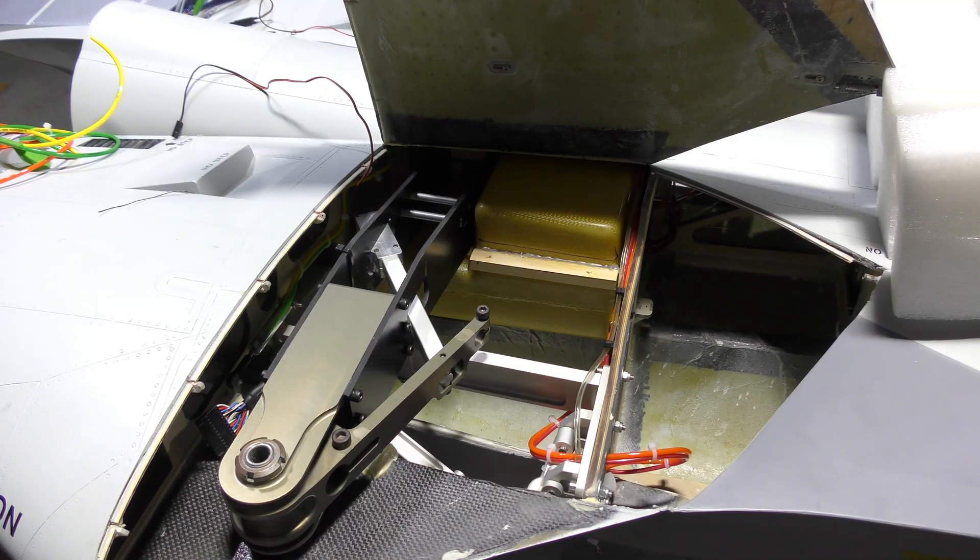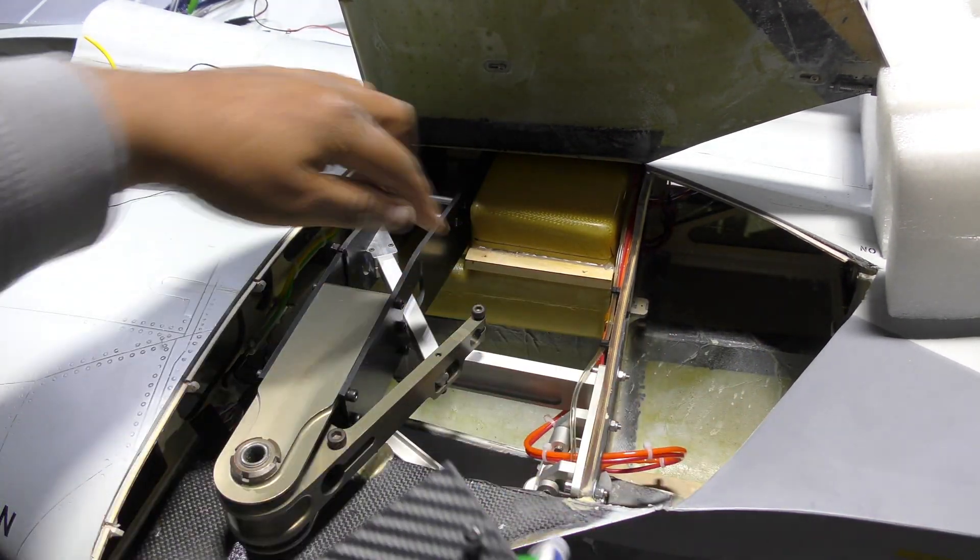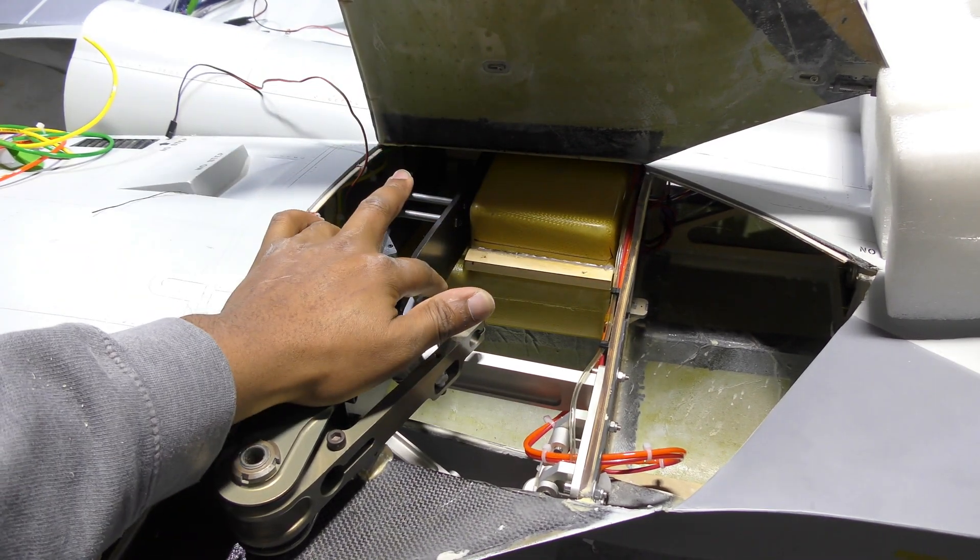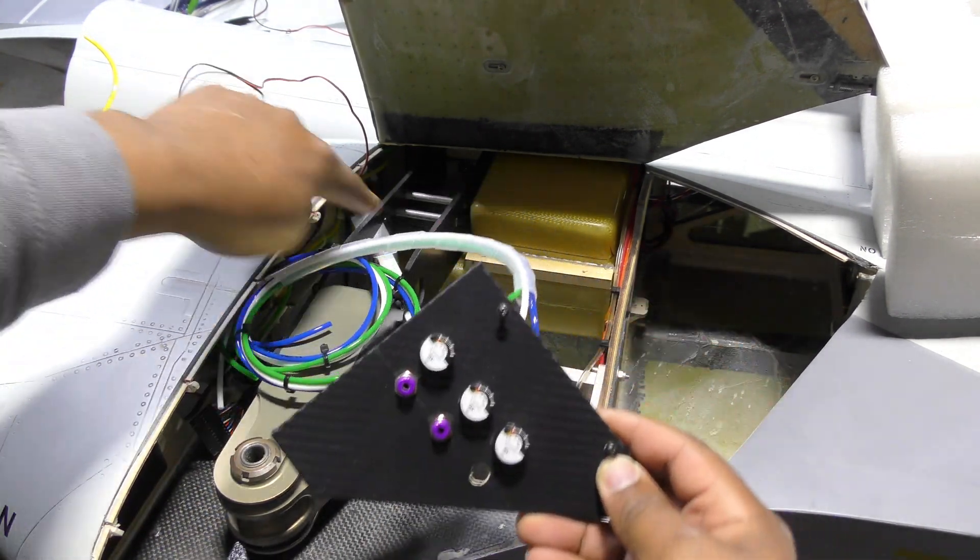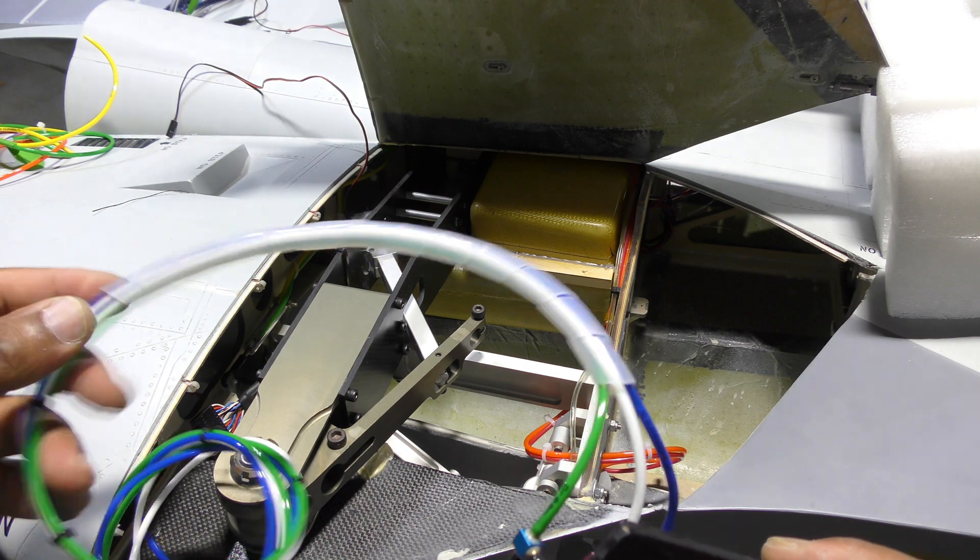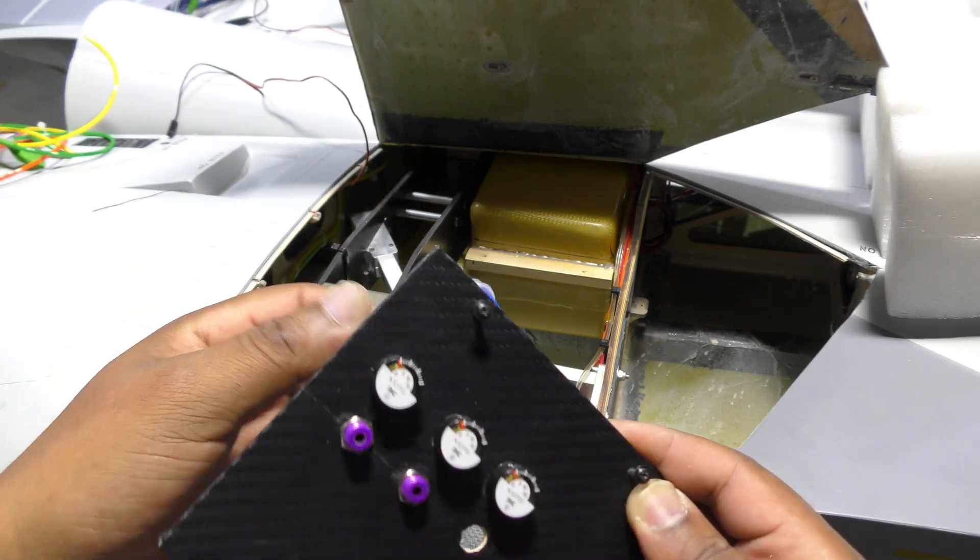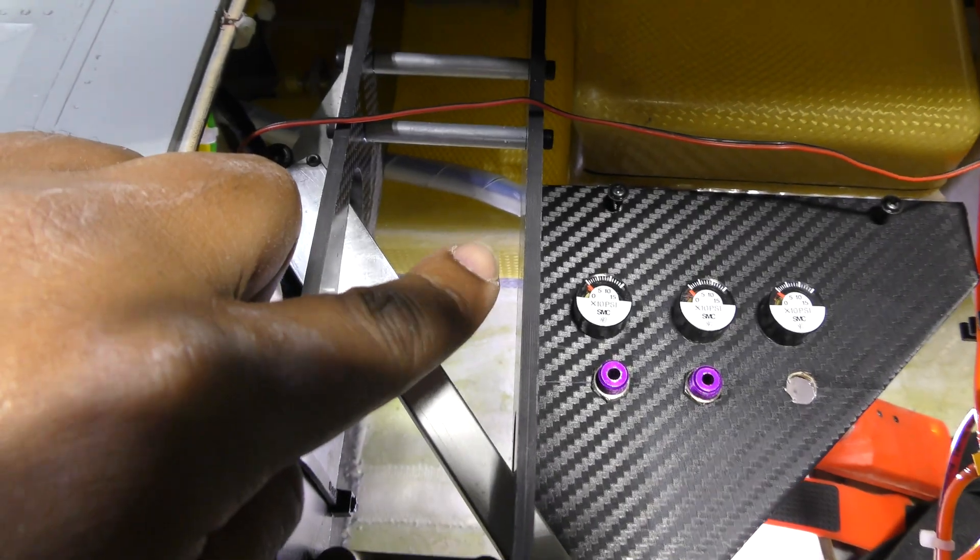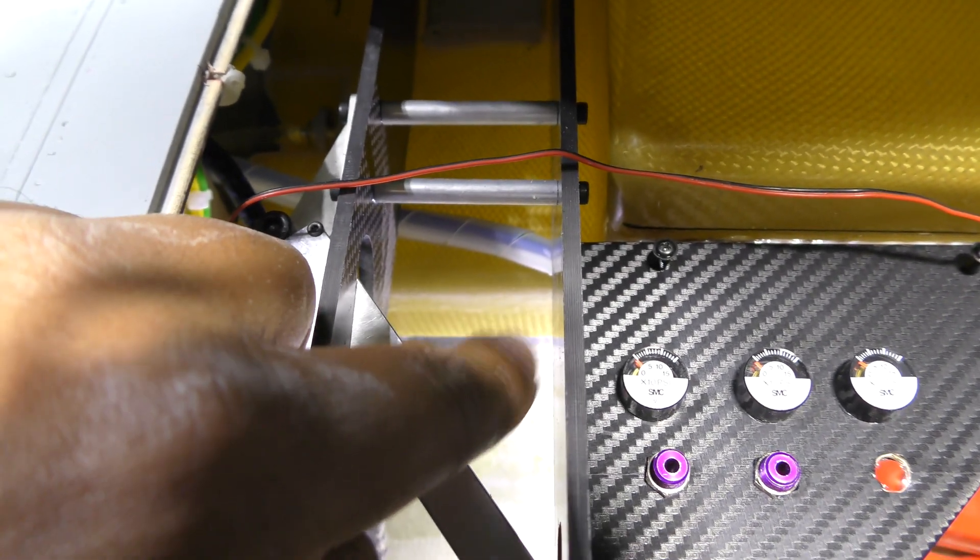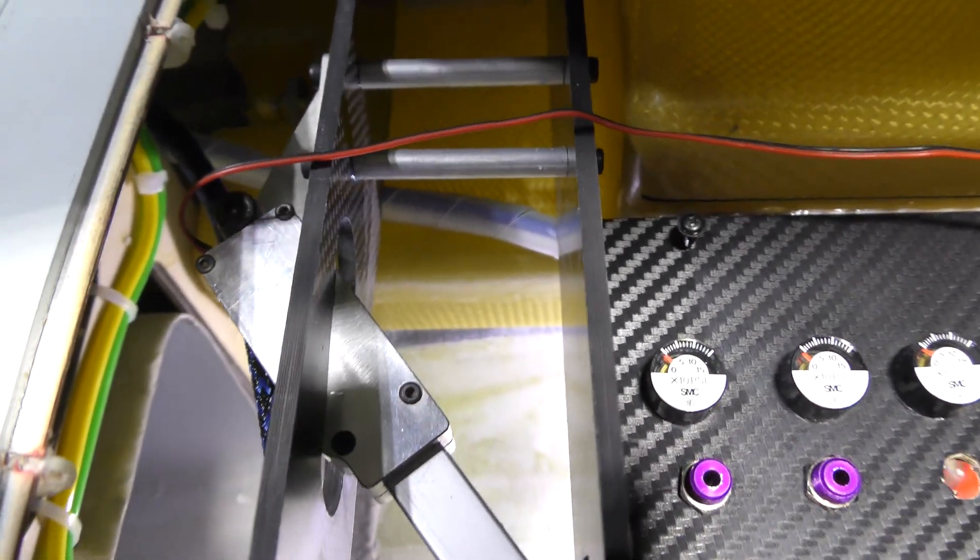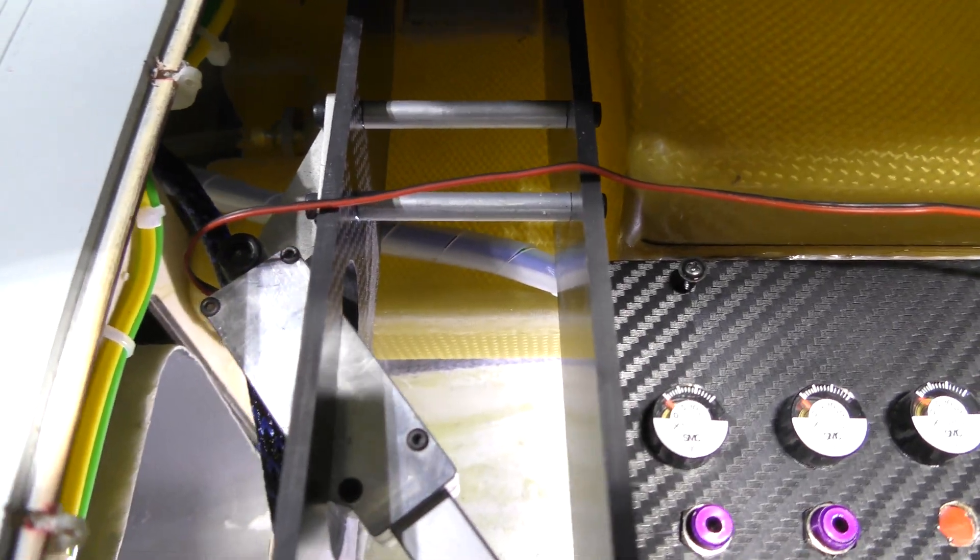One other thing I added is the spiral wrap, and that's because the way I'm thinking of routing these airlines is under the carbon fiber. But these edges are sharp, so that's just chafe protection. That's going to go under there and then get routed to the front. So just adding that so that over time that doesn't rub through and actually puncture the airlines.